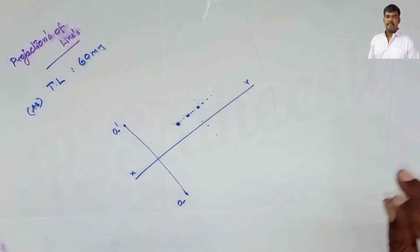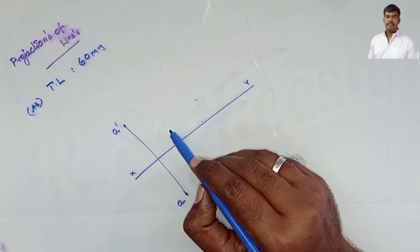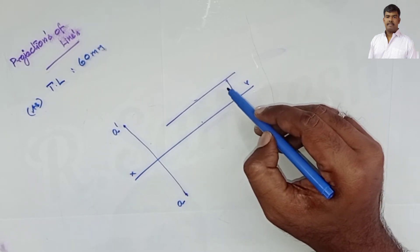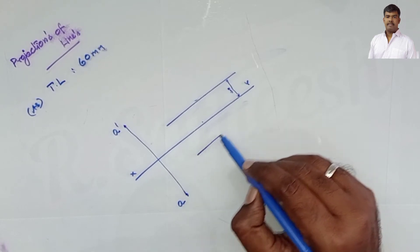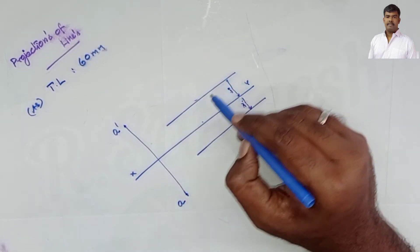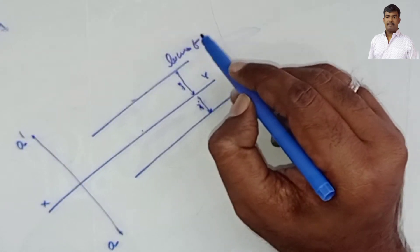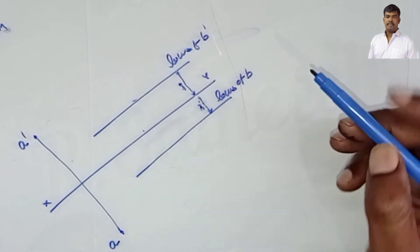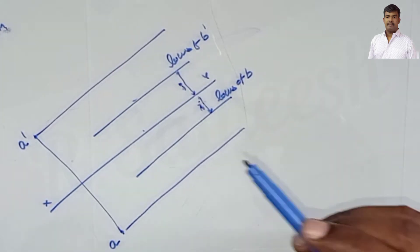We know only the distance is 20mm above HP and 25mm in front of VP, but we don't know the exact horizontal position of B. So we draw a locus line at 20mm distance and another locus line at 25mm distance. The end B lies somewhere on these locus lines - this is the locus of B-dash.